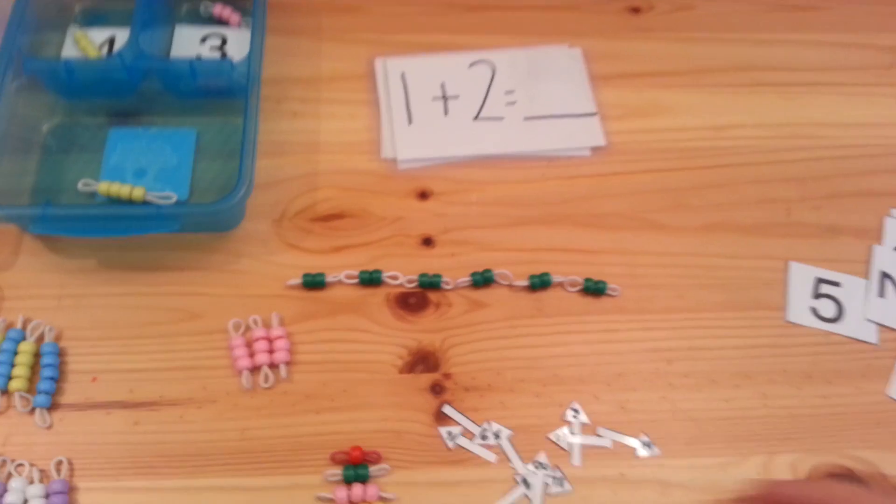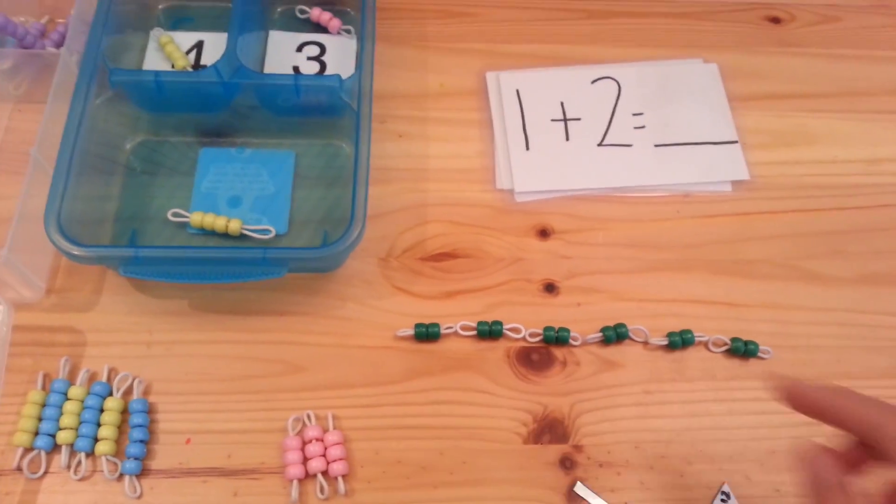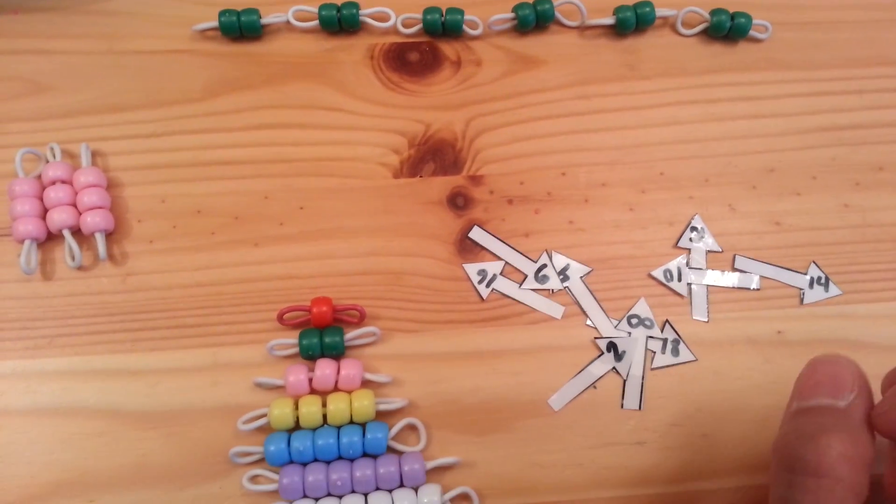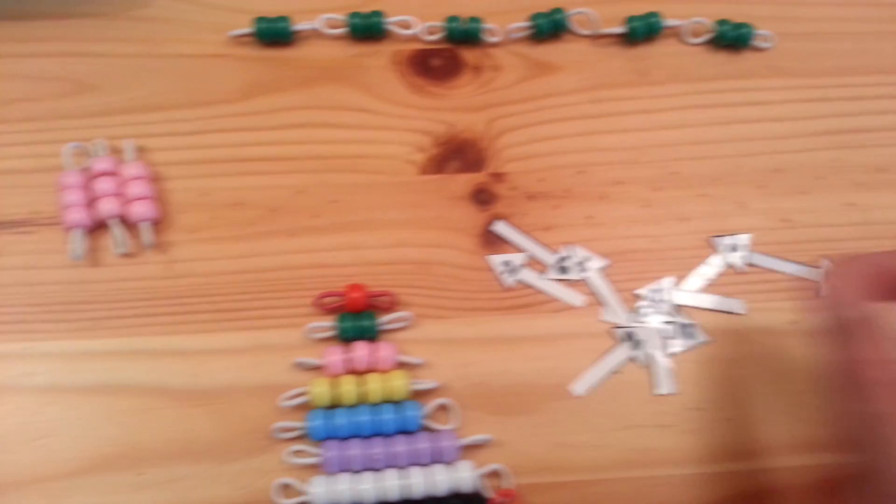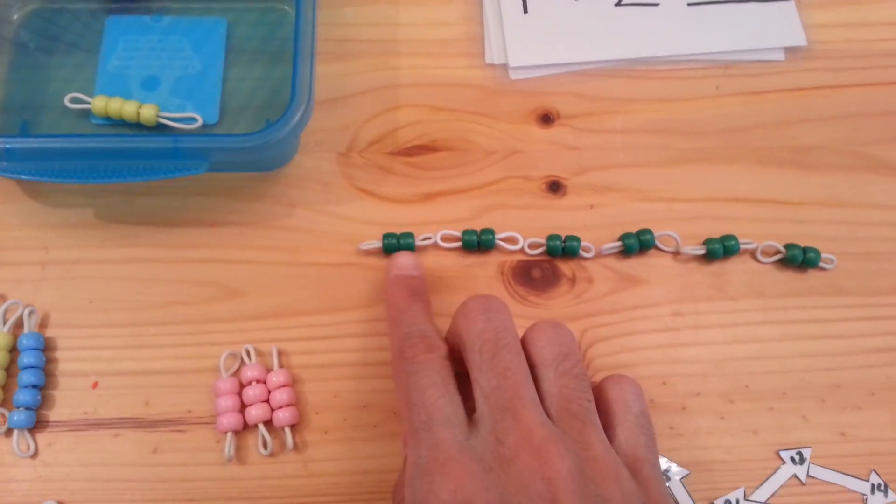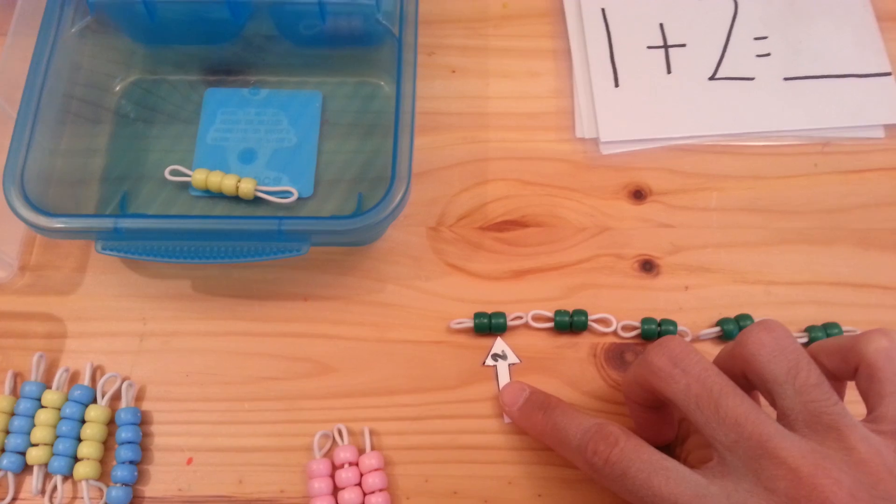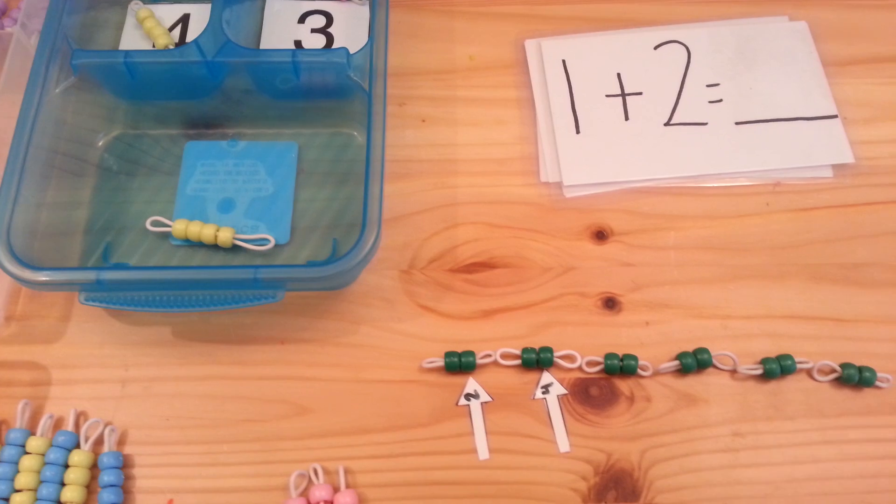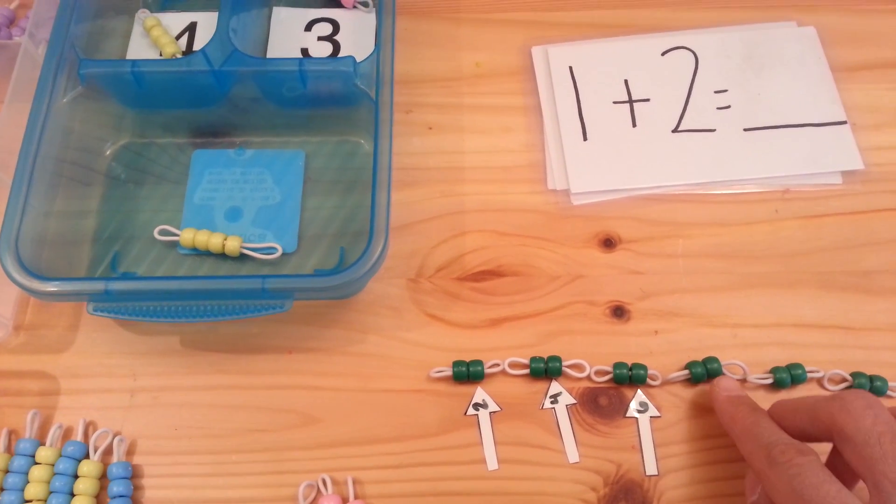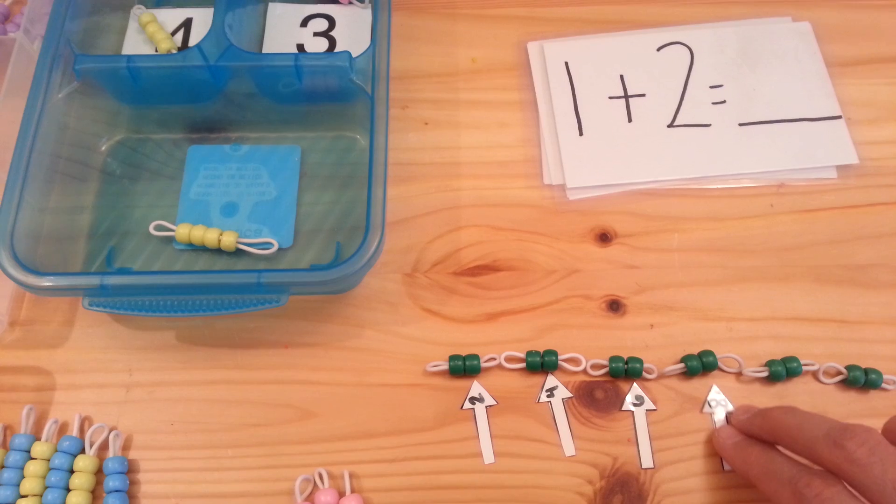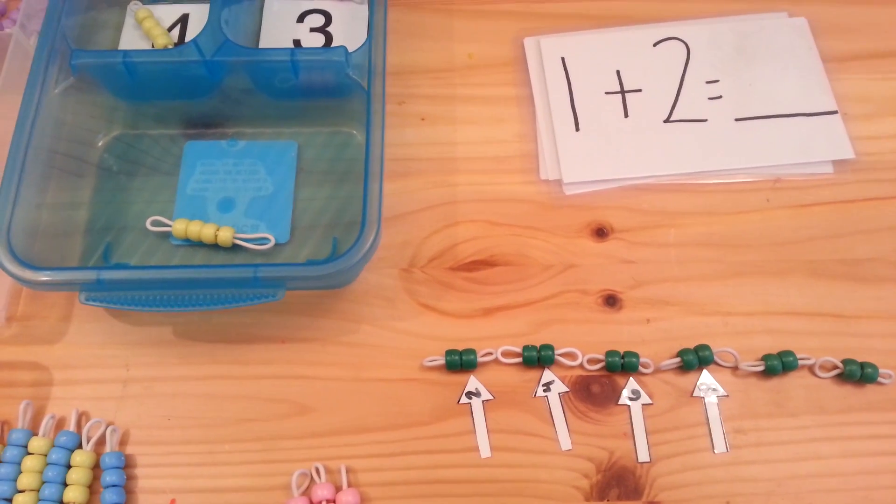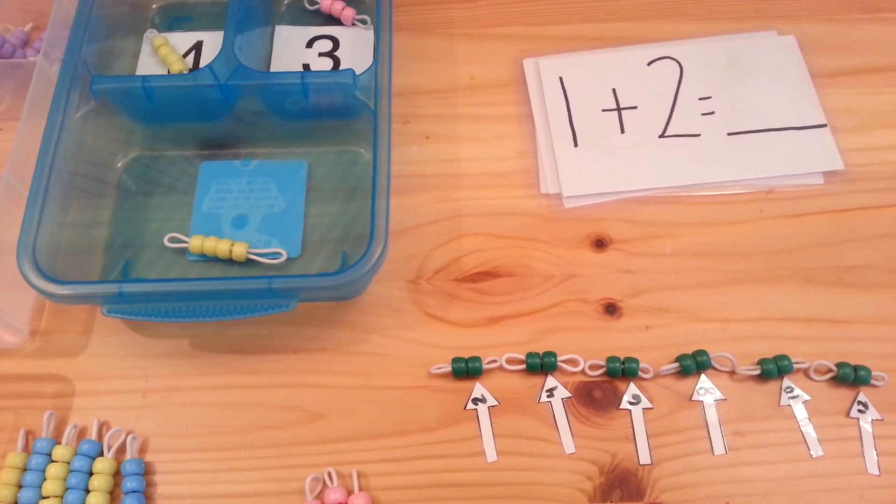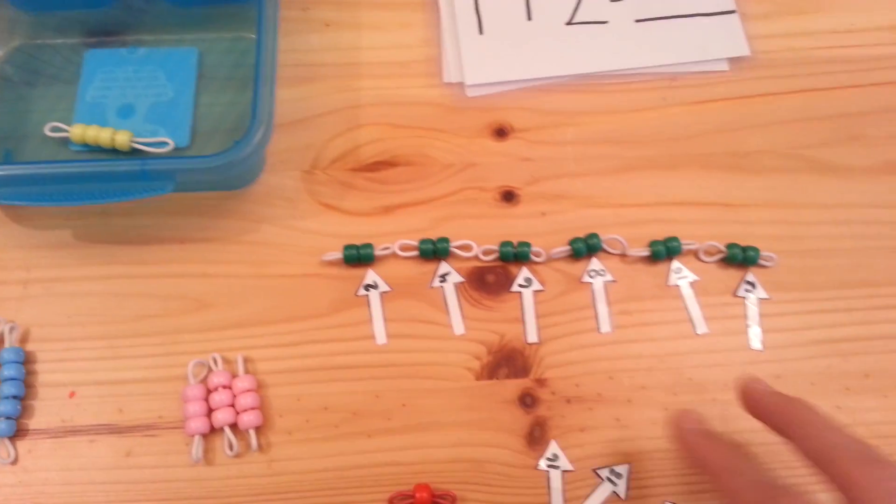Another activity that you may want to do is skip counting. You may want to skip count by twos. Here I have these arrows that are laminated and I have used a dry erase marker to write little numbers on there. You can get these for free on my blog as well. So you may want to have the child start counting one, two, and place it right at the end. Three, four, five, six, seven, eight, nine, ten, eleven, twelve.